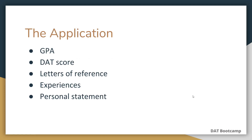Moving on, I'll talk about each component of the application, which is essentially composed of five main parts — technically six, but we'll get to that. The application is composed of your GPA, your DAT score, your letters of reference, your experiences, and your personal statement. I'll go through each of these individually so we get a better sense of what we're dealing with.